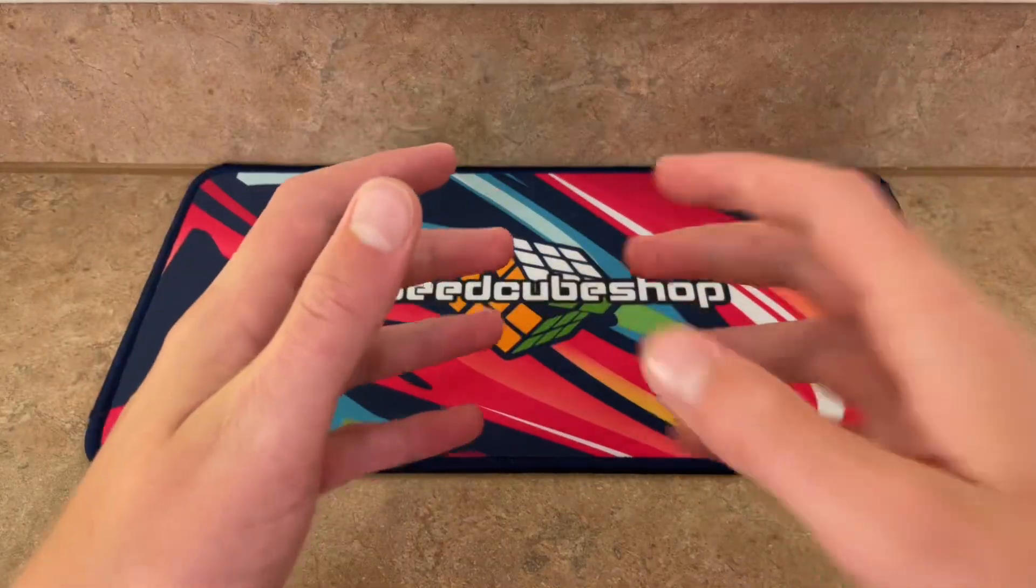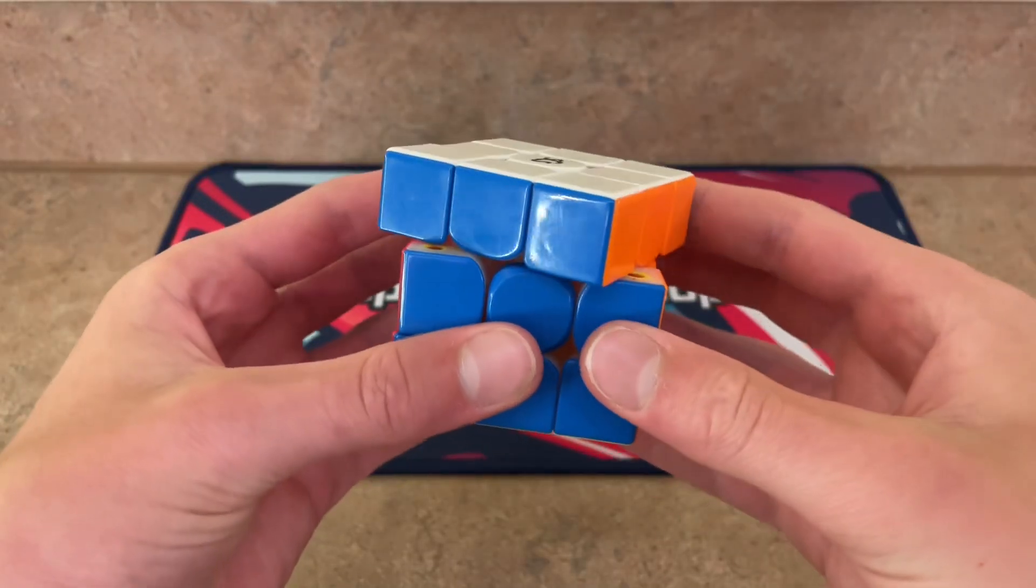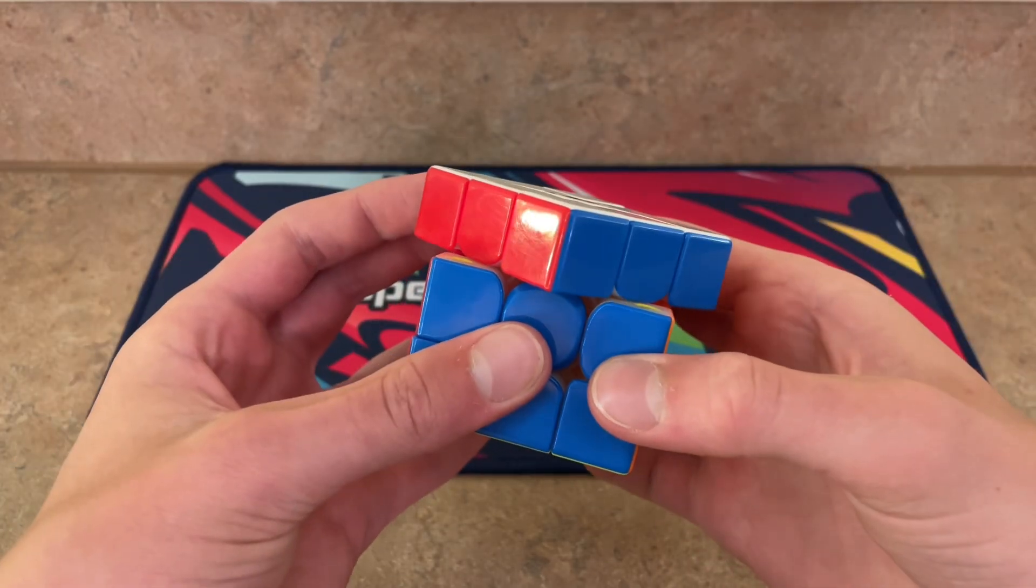And my best cube of all is the Tornado V3 Pioneer Edition. It has great corner cutting. It goes 45 degrees for normal and amazingly for backwards too.